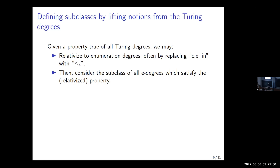The basic methodology of our work: suppose we have a property true of all Turing degrees. We can relativize it to talk about enumeration degrees in general. Often, if the property involves something like 'c.e. in,' we replace that with 'E-reducible to.' That usually agrees with the original notion on total degrees, but for general E degrees it may say something new. We can then consider the subclass of all E degrees satisfying this relativized property, and with luck it gives us something non-trivial that strictly contains the total degrees.